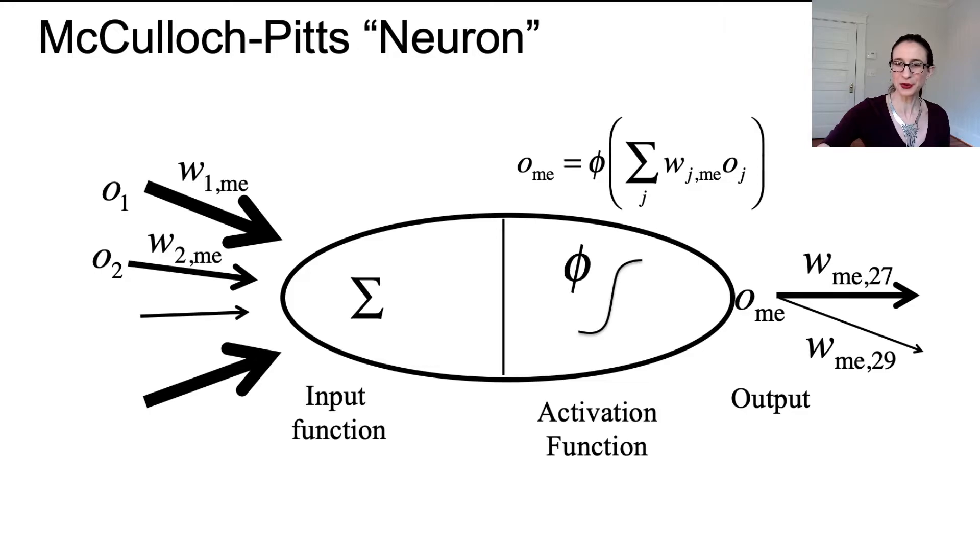The value of the activation function is actually the output of the neuron. I'm going to call it O_me because this is the output of this neuron. That of course feeds into the other neurons that are waiting for it weighted by the connection strength.